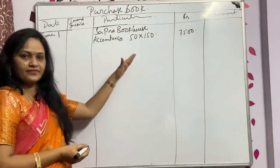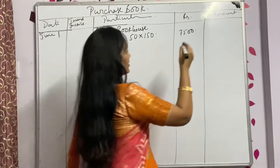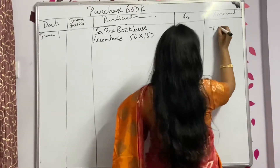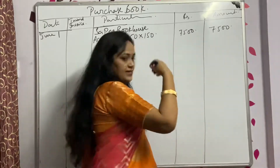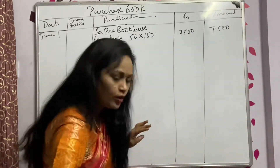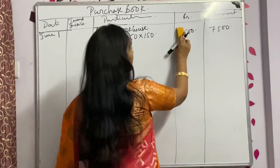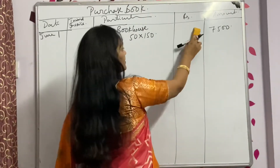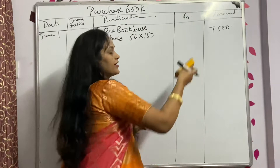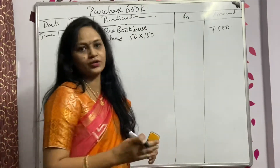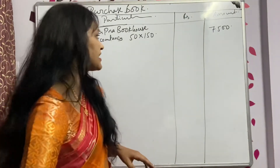If there is only one transaction, you can write directly in the outer column. If transactions are more, write in the inner column, then do the total and write in the outer column.